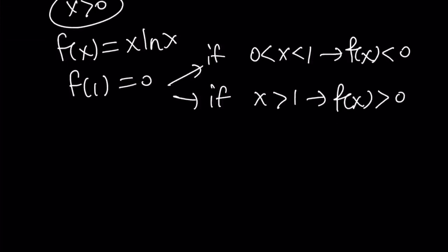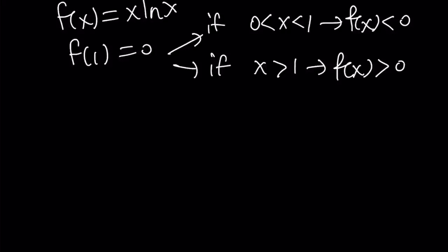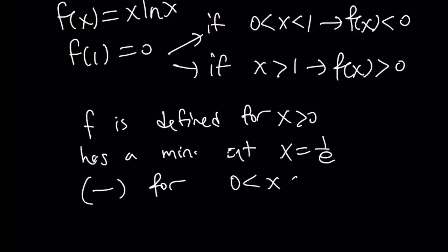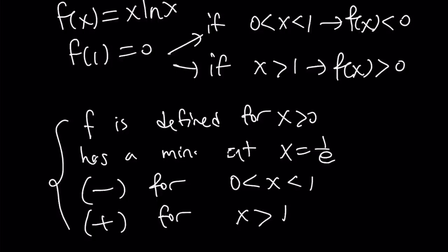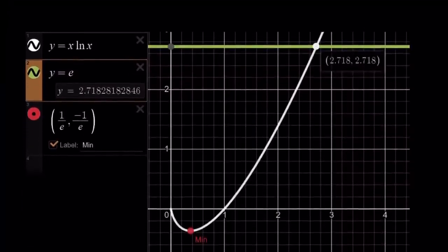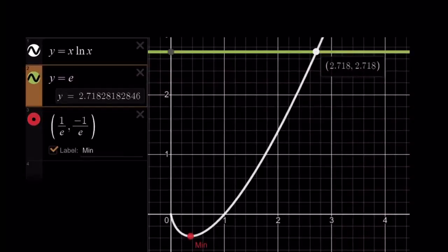Let's summarize what we know. f is defined for positive x values. It has a minimum at x equals 1 over e. It is negative for x between 0 and 1 and positive for x greater than 1. Here is the graph of y equals x ln x. As you can see, it has a minimum at (1/e, −1/e), and it intersects y equals e at only one point, which is x equals e. This confirms that x equals e is the only solution.